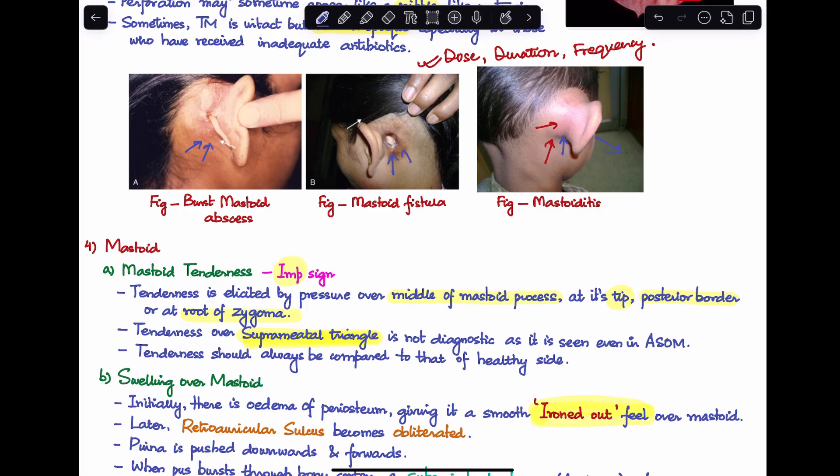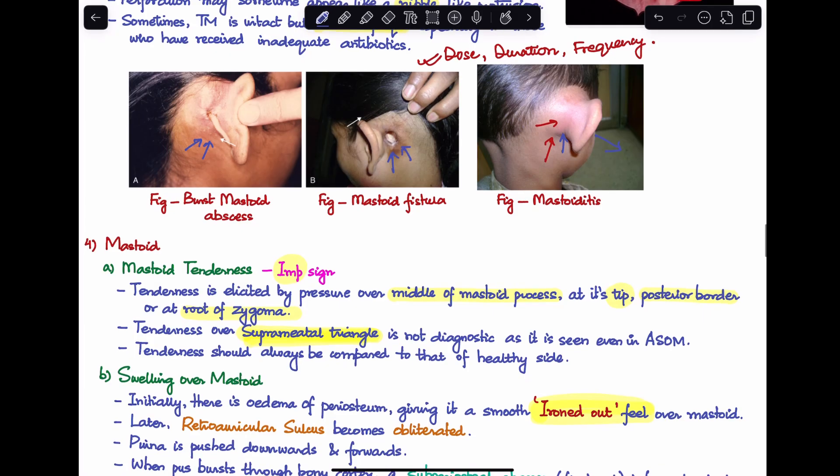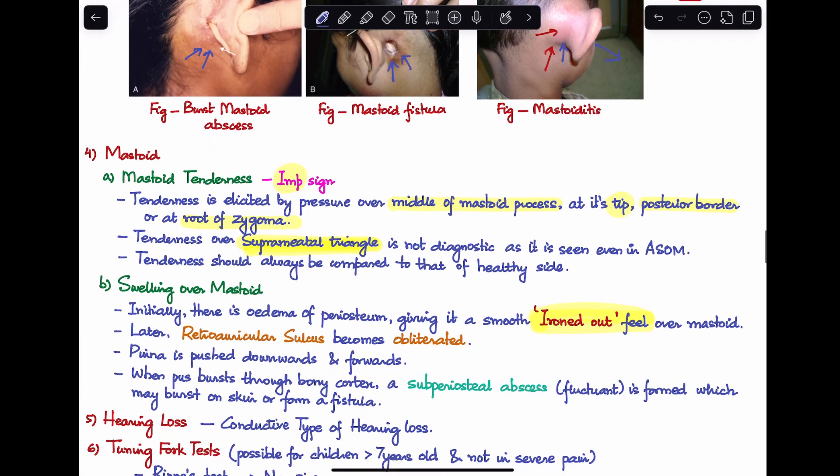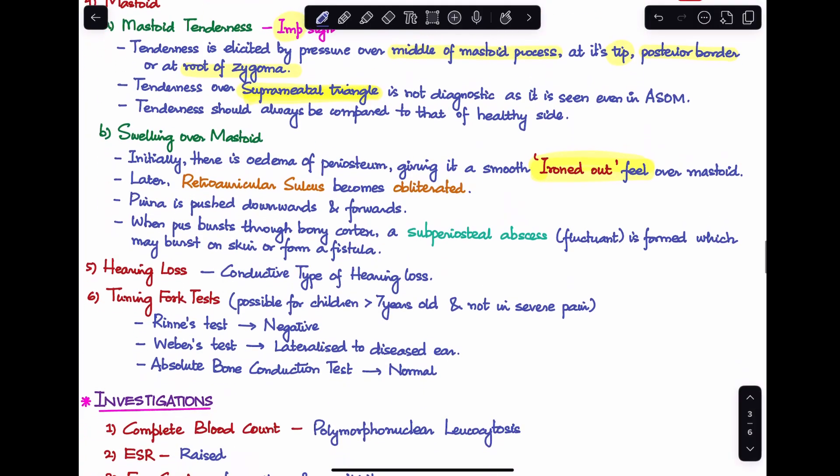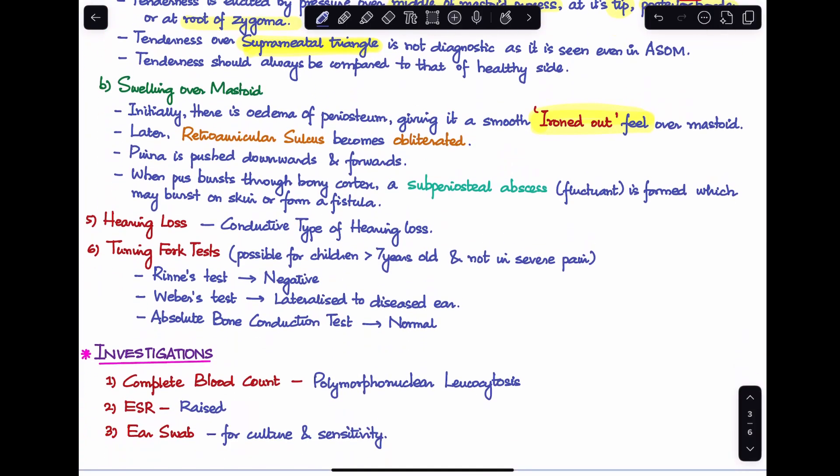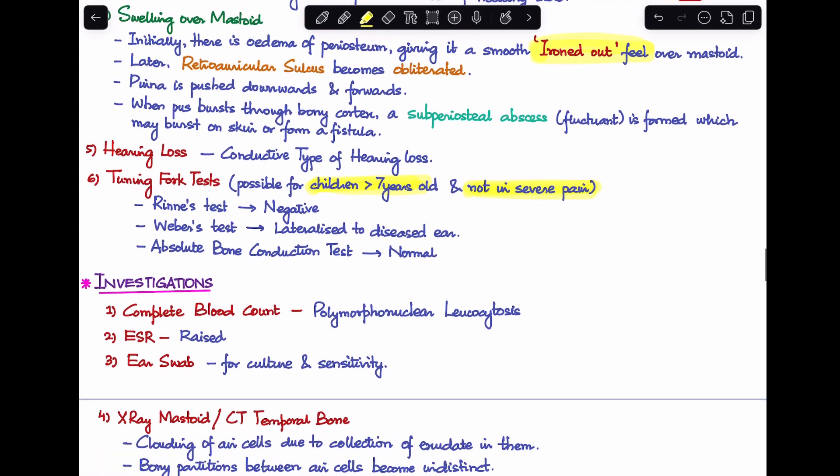Coming to hearing loss, we'll find conductive type of hearing loss which we can find out by performing tuning fork test, but this is only possible if the child is more than seven years of age and not in severe pain. These are all the clinical features in mastoiditis.